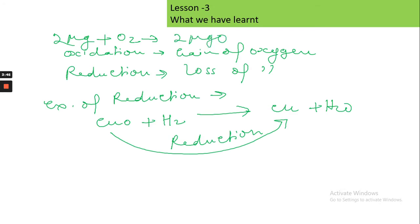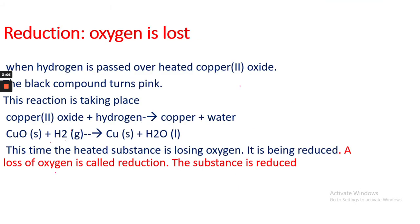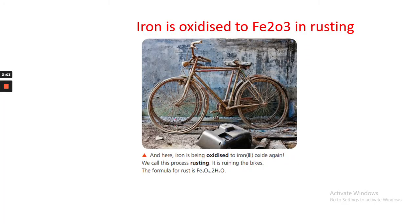Magnesium is oxidized into magnesium oxide, so oxidation occurs in this case. We know very well that when iron three oxide is reduced it gives iron, so that is also a reduction. In this lesson we will study how oxidation and reduction take place together.